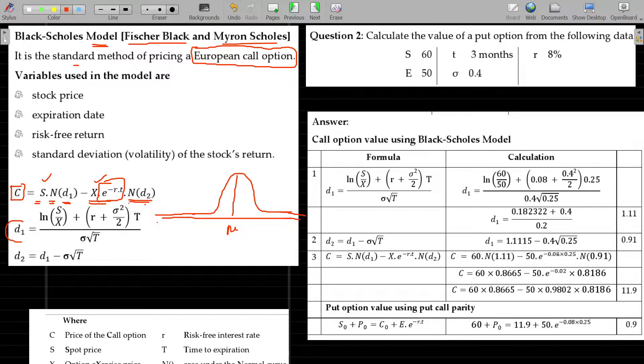What is D1? Natural log of S by X plus r plus sigma square divided by 2 multiplied by the time period, divided by standard deviation into root of time. D2 from the D1 subtract the denominator here, standard deviation into root of T.